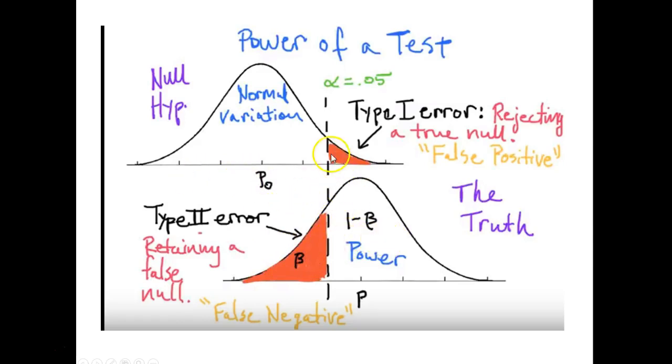Because if anything falls over here, we are going to incorrectly retain the null. Whereas once we're in this area, you can see we're past that critical region and we will reject the null and we will say yes, this is the normal curve that we're actually acting on right now.